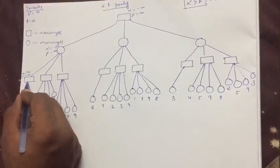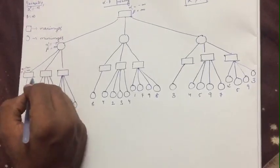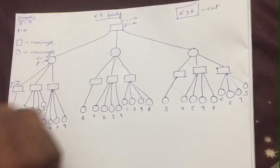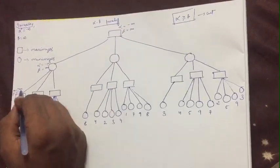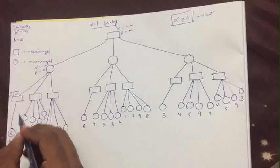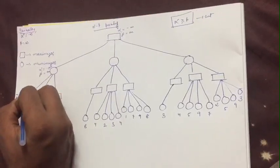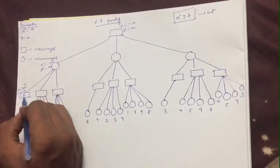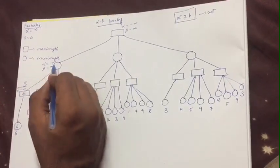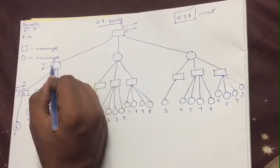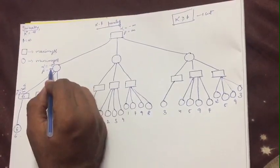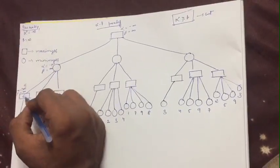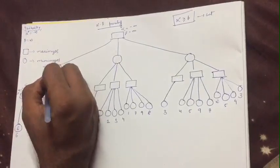We traverse back to a maximizer node, which means we change the value of alpha. Which is greater: minus infinity or 6? Obviously 6, so we cut minus infinity and write alpha as 6. Now traversing back up to the minimizer node, we check which is minimum between beta (infinity) and 6, and we update beta.